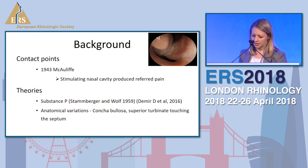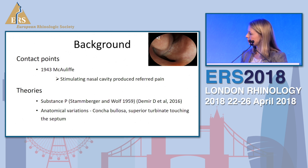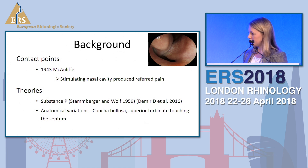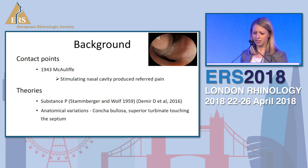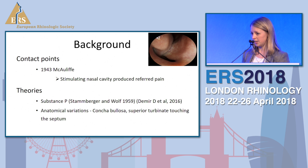However, since we know that substance P is produced in the normal nasal mucosa, there's no evidence that it's produced specifically by contact points. Also, there's a body of evidence describing anatomical variations and how these are linked to facial pain, and advocacy of surgery to remove the contact points — for example, variations such as a concha bullosa or superior turbinate touching the septum.